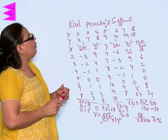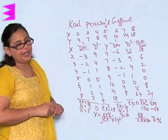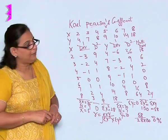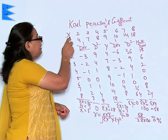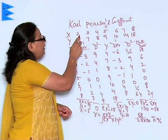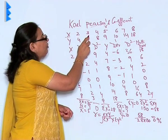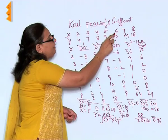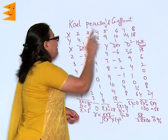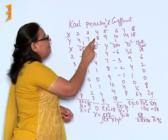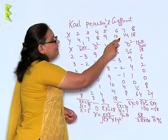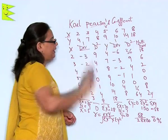Now I am going to take up a sum. X is equal to 2, 3, 4, 5, 6, 7 and 8, and Y is 4, 7, 8, 9, 10, 14 and 18.